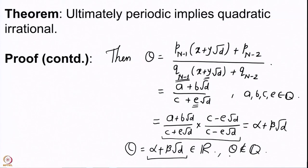So θ is of the form α + β√d where α and β are rational numbers. Since the continued fraction expansion does not terminate, θ is not rational, so β cannot be zero. Therefore θ is a quadratic irrational. Examples include √2 with its ultimately periodic expansion, and (1+√5)/2 which has a purely periodic expansion, as does root 3. Any such ultimately periodic continued fraction must represent a quadratic irrational.